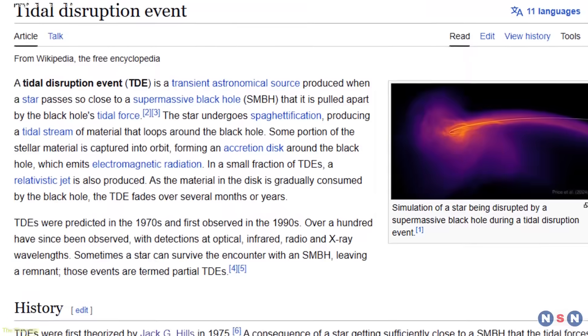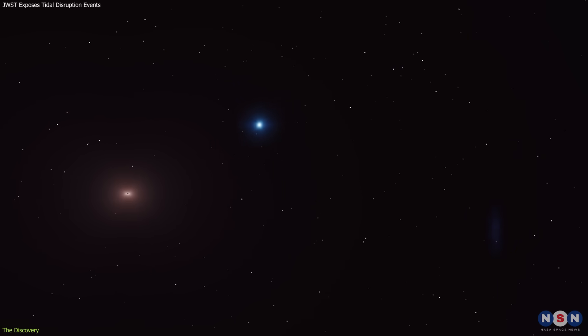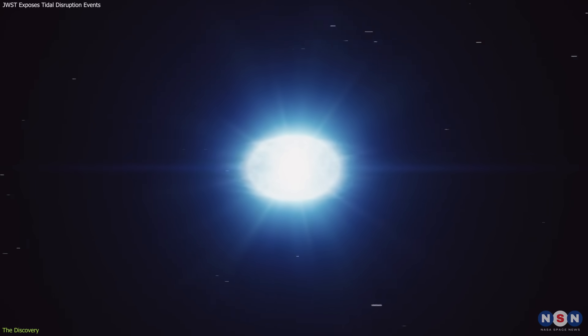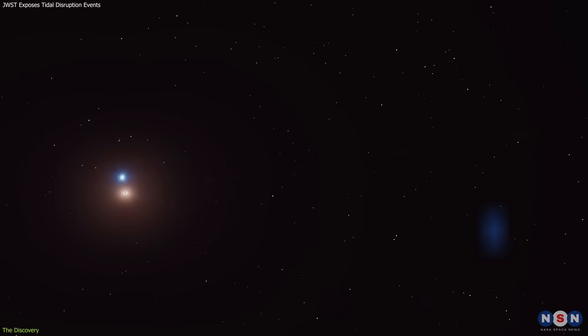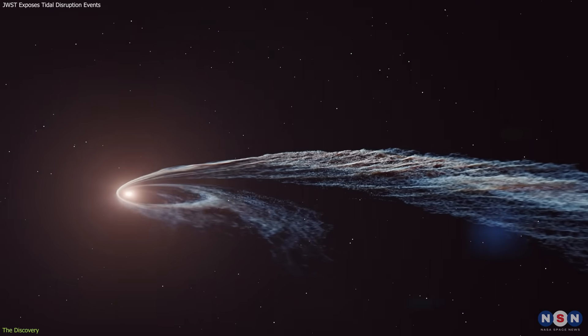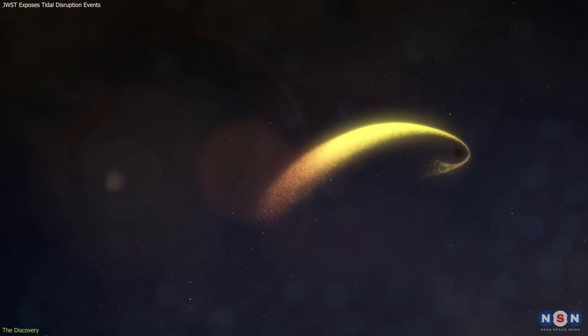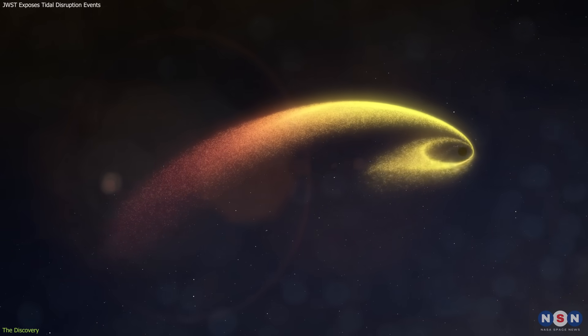Tidal disruption events, or TDEs, occur when a star drifts too close to a supermassive black hole and is torn apart by gravity. The shredded material forms a rapidly heating accretion disk, producing a sudden flare of radiation. Such events are rare, and until recently, astronomers had recorded only about a hundred of them.